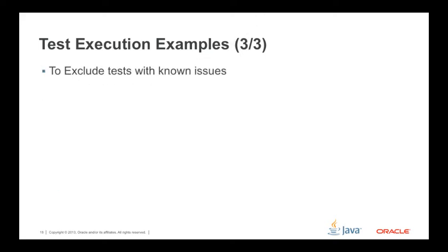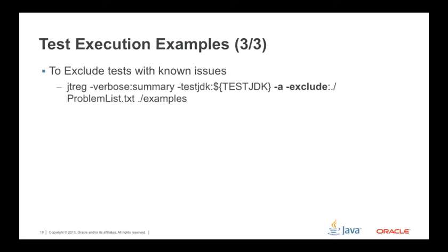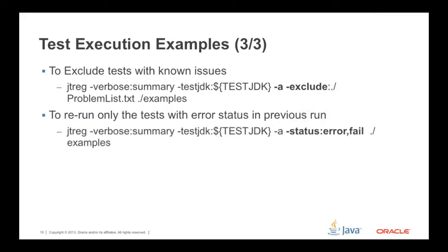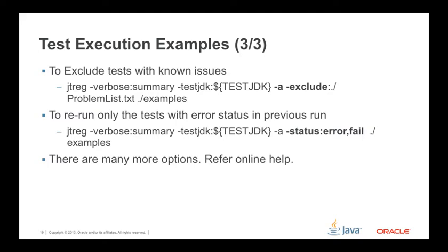To exclude tests with known issues, use the '-exclude' option with JTREG. To rerun only tests with error status, use '-status:error'. If you want to run tests with both error and fail status, use '-status:error,fail'. There are many more options — the best place to refer is the online help, by typing 'jtreg -h' or 'jtreg -onlinehelp'.